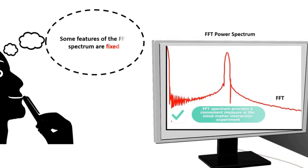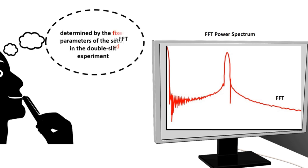Some features of the spectrum are fixed, determined by the fixed parameters of the setup in the double-slit experiment.